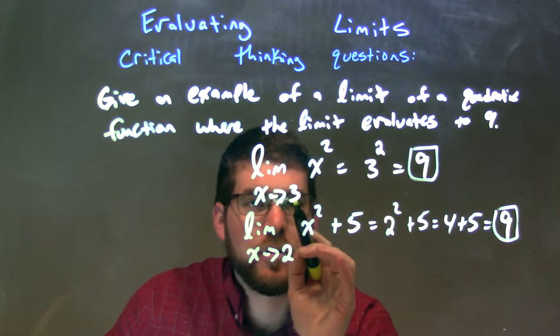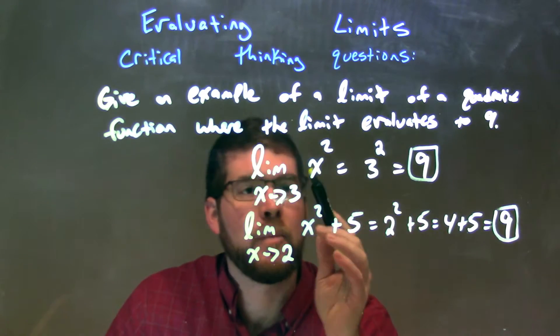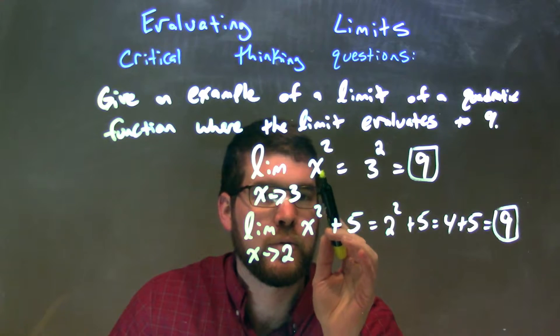The first one, limit as x approaches 3 of x squared. We can plug directly 3 in for x. 3 squared is 9.